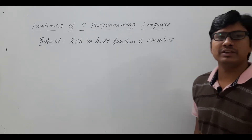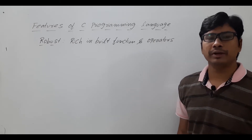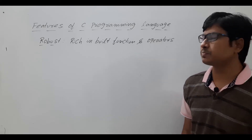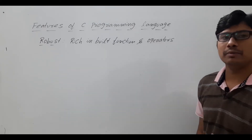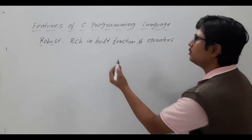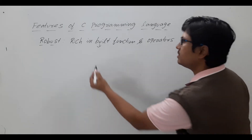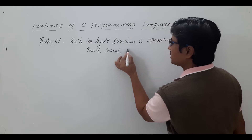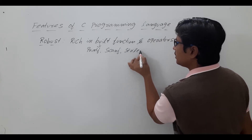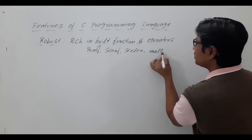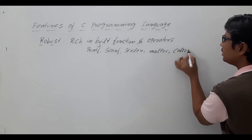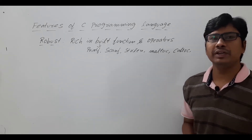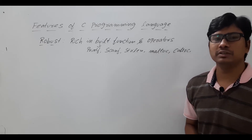C programming language is a type-oriented programming language — you have data types — whereas B and BCPL are typeless programming languages. The rich inbuilt functions include printf, scanf, strlen, malloc, calloc, realloc, free, and many others. Using these inbuilt functions we can design complex programs using C.